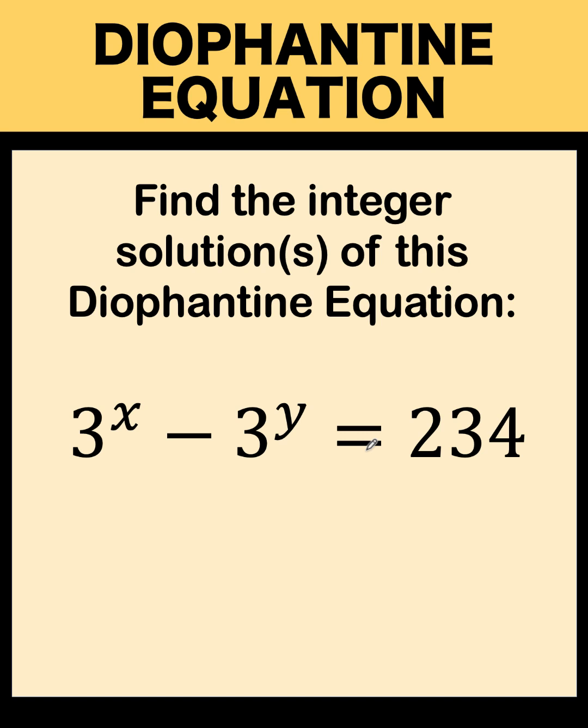Hey everyone, here's our math problem for today. This is about the Diophantine equation. Find the integer solutions of this equation: 3 raised to x minus 3 raised to y equals 234.